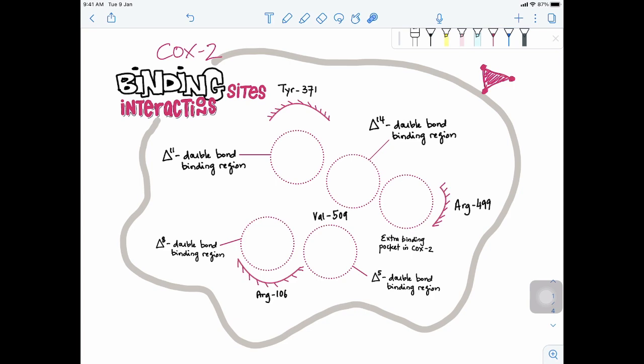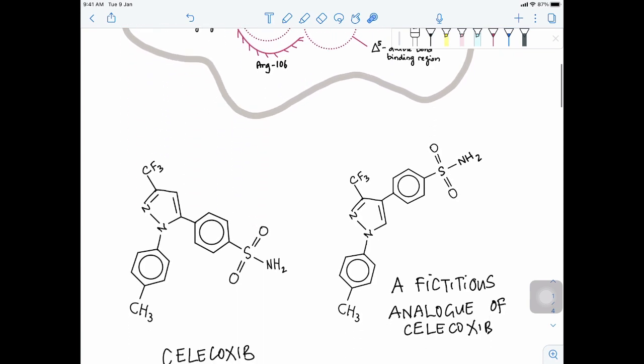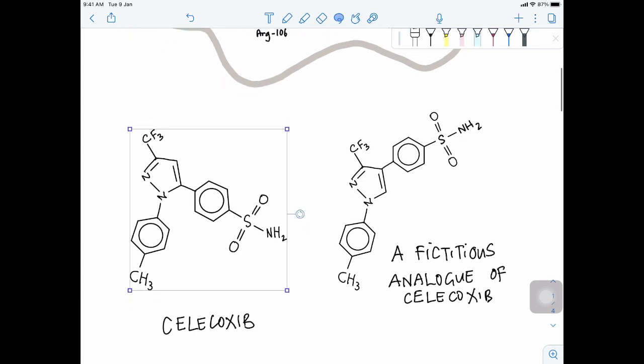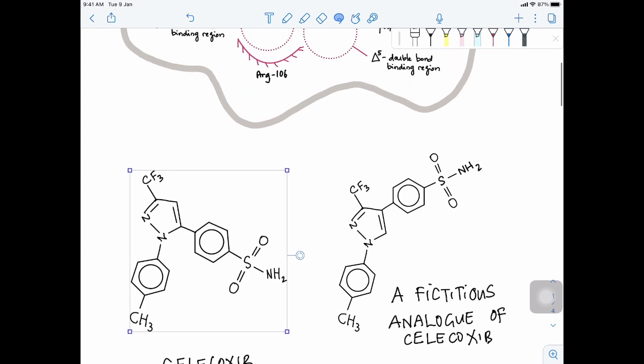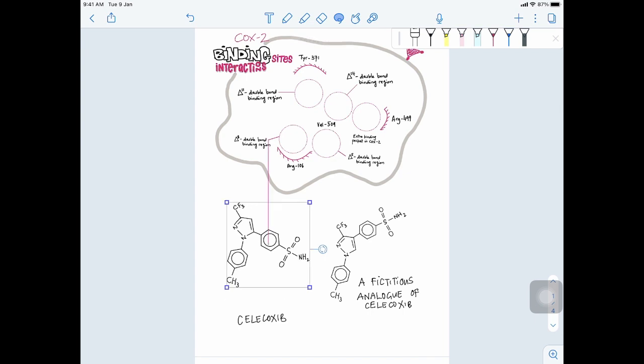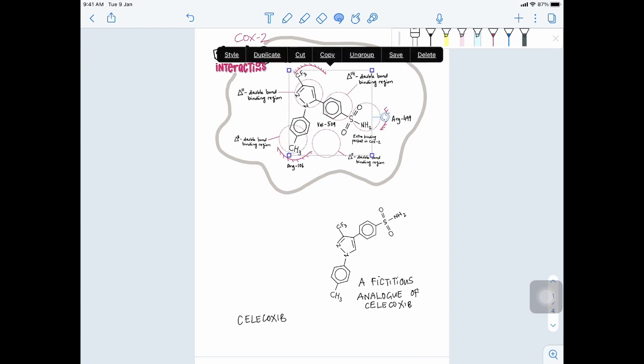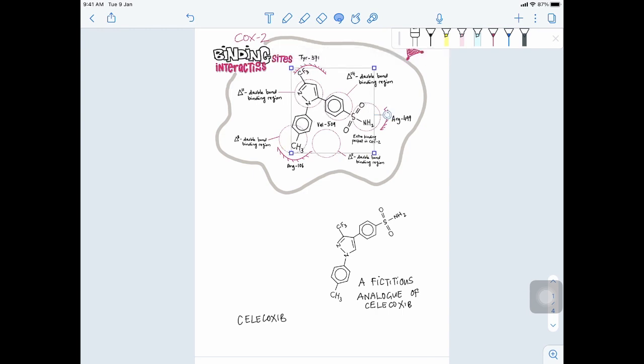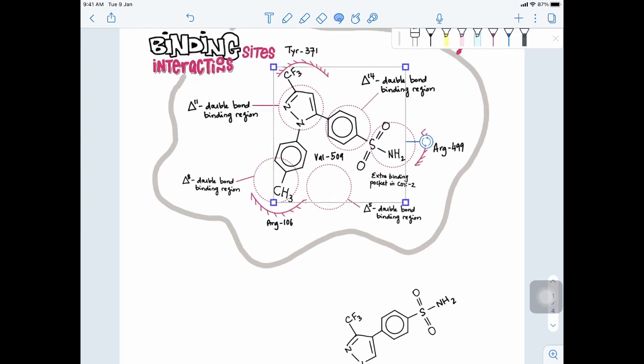Let's have a look at two different compounds. I'm going to take celecoxib here. This is celecoxib you have seen earlier. I'm going to drag this celecoxib over to the binding site in the COX-2 enzyme. Let's put the rings into the different sites. Let's zoom in.